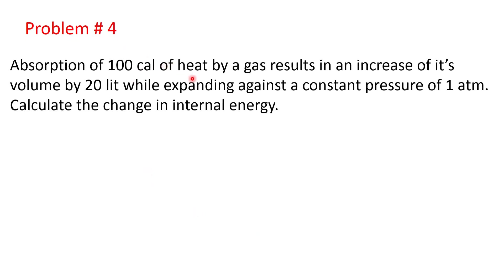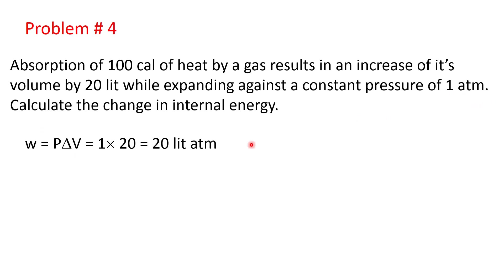Problem number 4: Absorption of 100 calories of heat by a gas results in an increase of its volume by 20 liters while expanding against a constant pressure of 1 atm. Calculate the change in internal energy. First, let's calculate the pressure-volume work done by the gas — since it is expansion, work is done by the gas. PV work = 1 atm × 20 L = 20 liter-atmosphere.